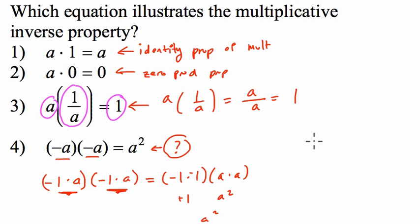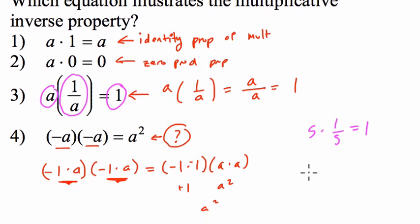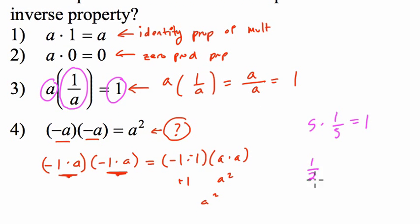In general, you might look at other examples. For example, five times one-fifth. Those are reciprocals, and they equal one. So those are reciprocals of each other, and they multiply to one. That's the multiplicative inverse property. If you have a fraction in the beginning, like one-half, multiply it by two—those are reciprocals of each other, and the product is one.